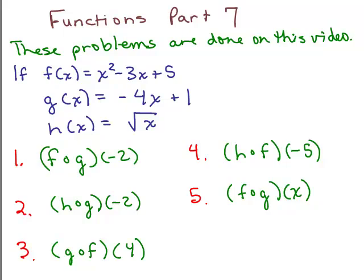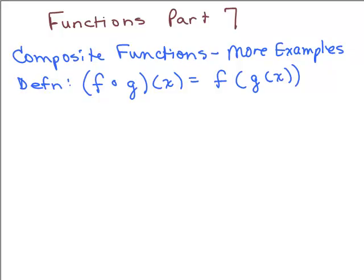In this video, we do the following five composite functions. This is part seven of functions and we're going to be doing some more examples with composite functions. Remember the definition and the notation: we write f of g of x. Remember this little circle here means that's a composite function — that just means f of g of x. So let's try some examples.